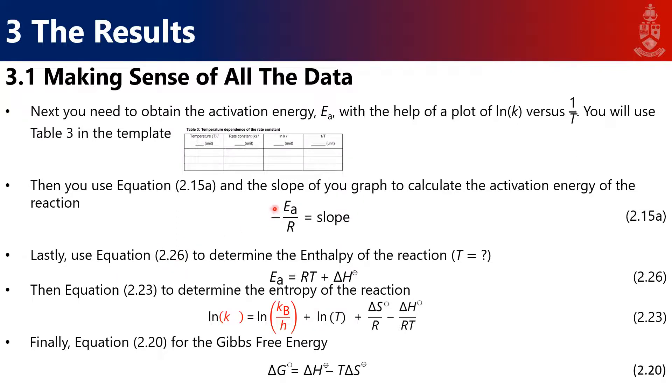From the activation energy, we can determine the enthalpy using equation 2.26. So the activation energy is equal to rt plus delta h standardized. So standardized, meaning what is the temperature, standard temperature and pressure. So standard in Kelvin would be the one at 25 degrees Celsius. What is the Kelvin temperature for that? Plug it in there. You know what the gas constant is. Take it over. Calculate delta h.